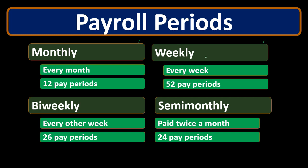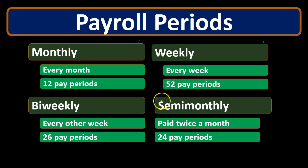Monthly is, of course, 12 months — pretty straightforward. Weekly, we have to memorize that there are 52 weeks in a year, so 52 pay periods if we pay weekly. Biweekly means we're paying every other week — it doesn't necessarily mean we're paying twice a month. What it means is that we're taking 52 divided by 2 to get to 26 pay periods. Whereas if we pay semi-monthly, we're paying two times a month no matter what, so that's 12 months times 2, giving us 24.